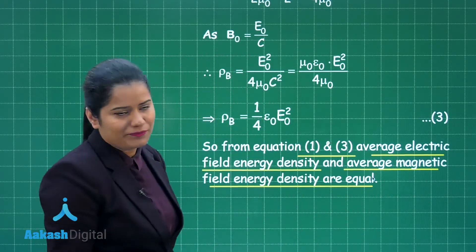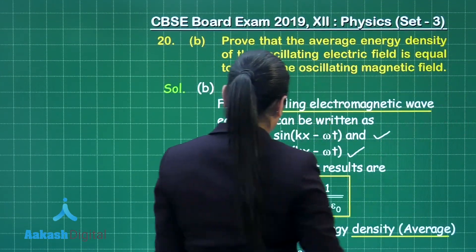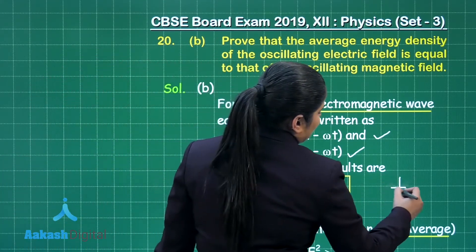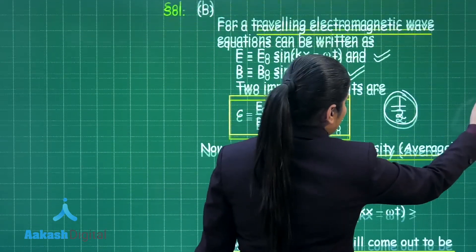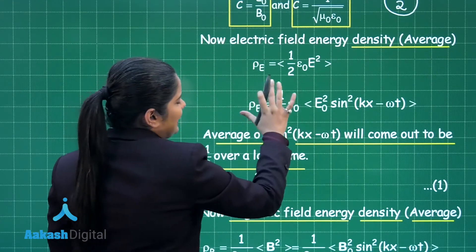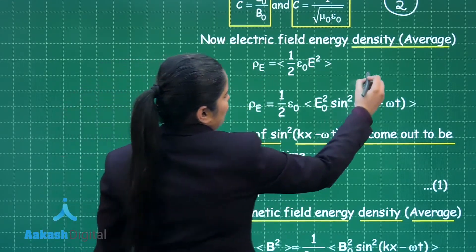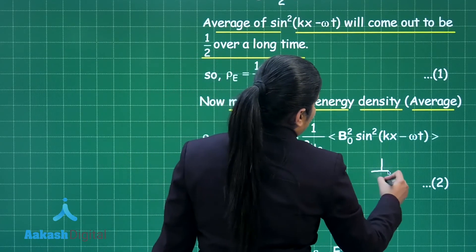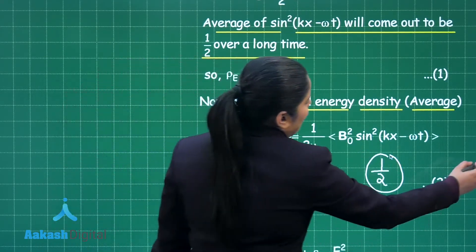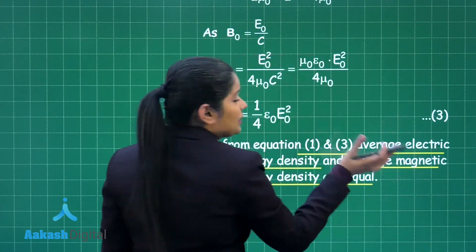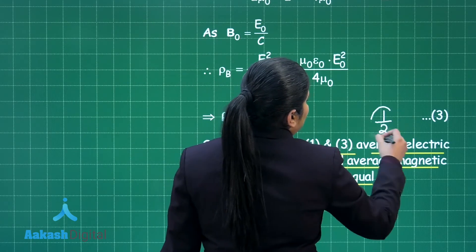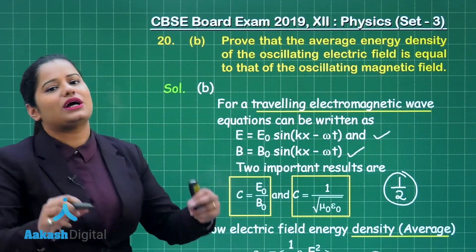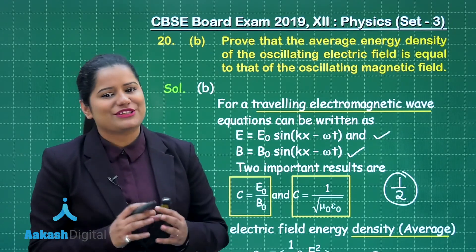For the marking scheme of this two-mark part: half mark for writing the relation, half mark for calculating the electric field energy density, half mark for calculating the average magnetic field energy density, and the final half mark for comparing both results and stating they are equal. That gives two out of two marks for this part and a total of three out of three marks for the full question.